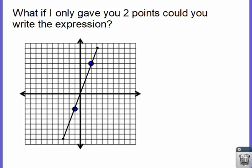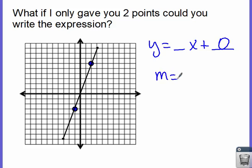What if I only gave you two points? Then you do the same exact thing — you just use those two points. So y equals blank x plus blank. Our y-intercept appears to go right through the center, right through the origin, so our y-intercept is 0. For our slope, we go from the left point to the right point — always left point to right point. We rise 9 and run 3, so our slope is 3.